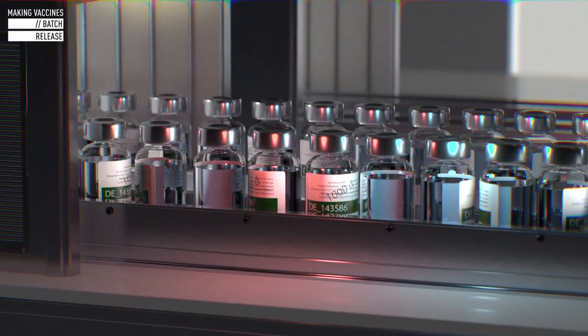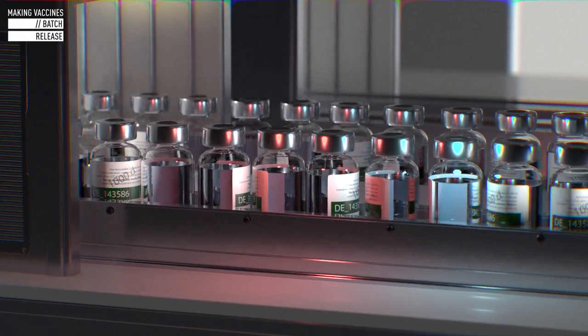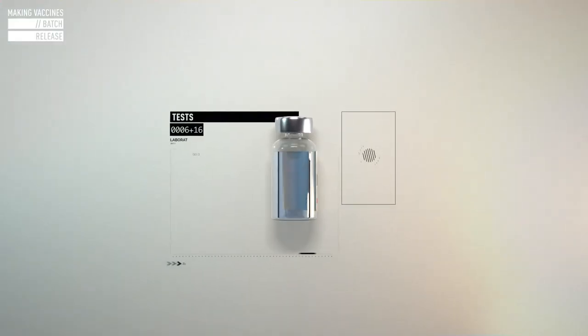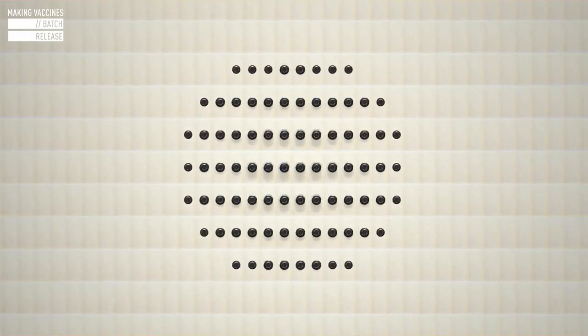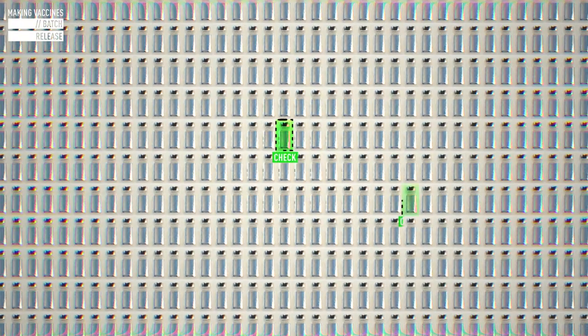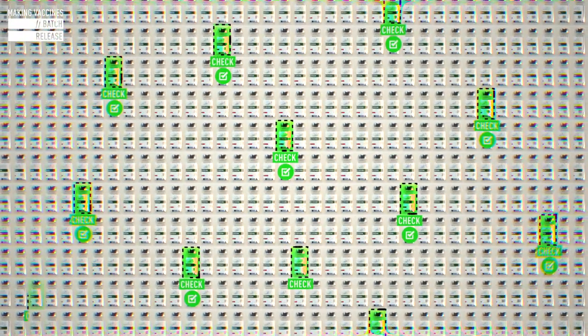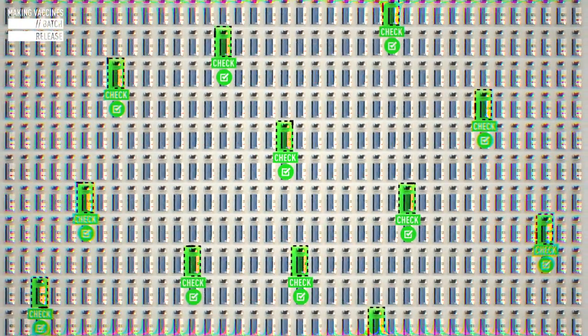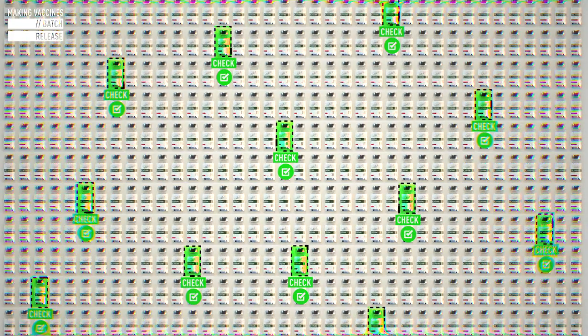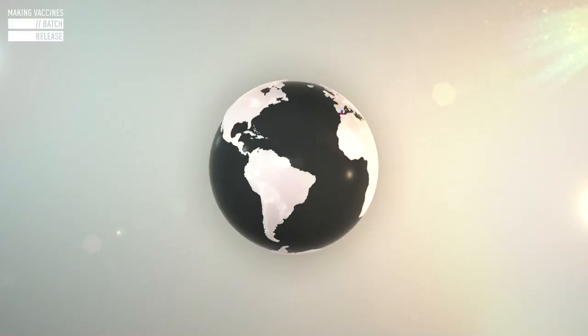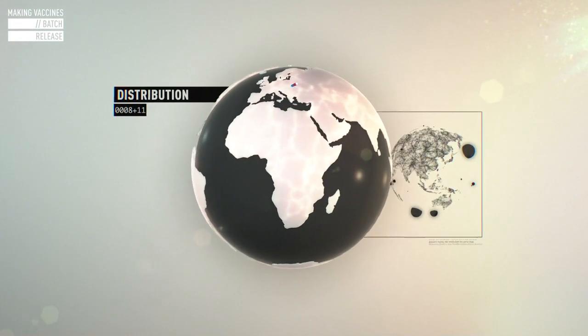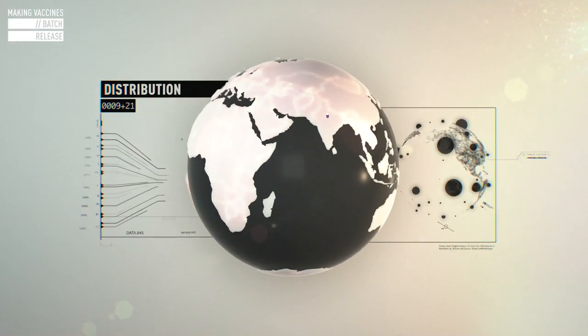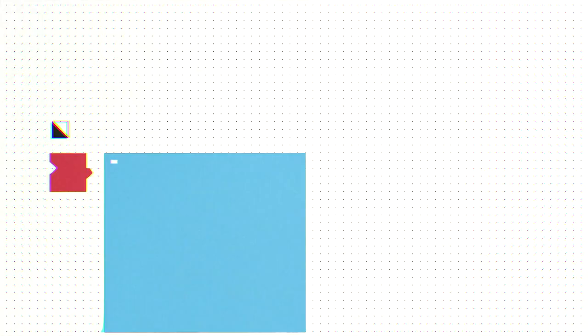All along the production, Sanofi Pasteur performs hundreds of laboratory tests on each and every batch of vaccine to confirm quality. In addition, samples are taken from each batch and sent to public health authorities for testing as well. Only after the vaccines have successfully passed both sets of tests can distribution begin. There are no exceptions. If a batch does not meet the quality criteria, it will be destroyed.